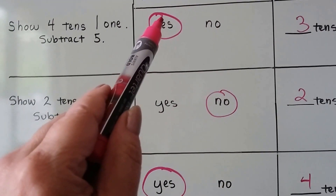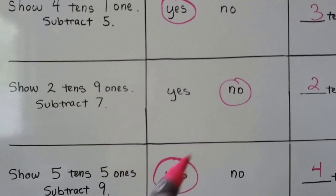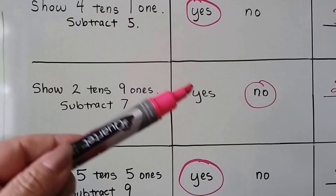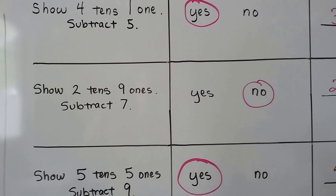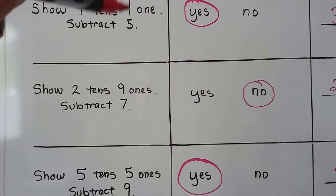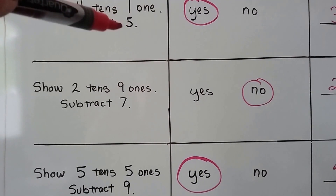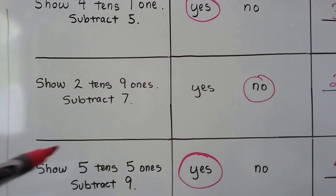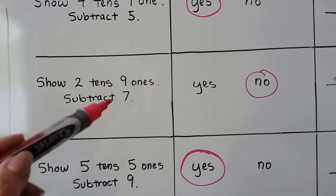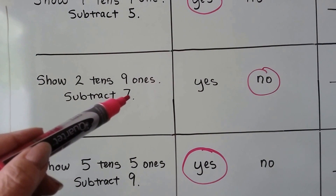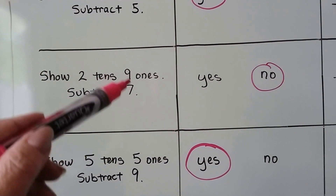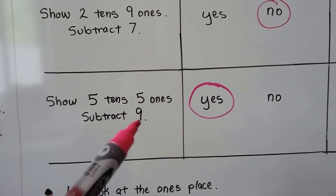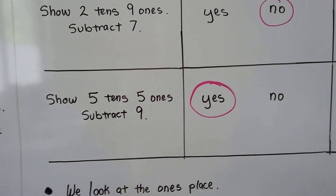We needed to regroup on the first one, but not the second one, and then we needed to regroup on the third one. So what was happening that we needed to regroup sometimes but not others? Look at the ones place. We got 4 tens but we have 1 one and we need to take away 5. The number we're subtracting was bigger than what was in the ones place, so yes, we had to regroup. For the second one, there were 9 ones and we needed to subtract 7 — the number we were subtracting was smaller, so we didn't need to regroup. For the third one, we had 5 ones and needed to take 9 away. The 9 is bigger, so yes, we needed to regroup.